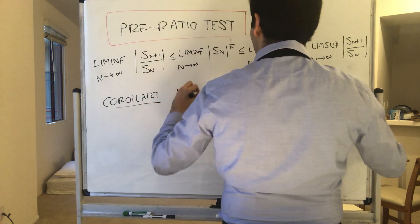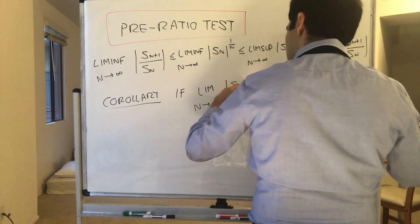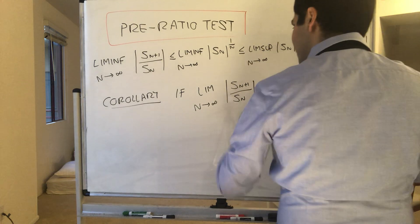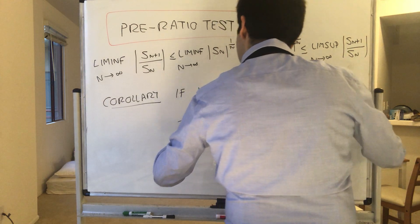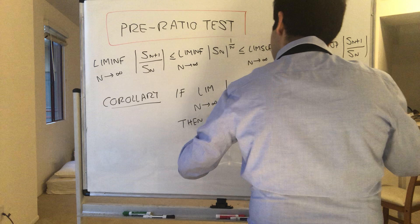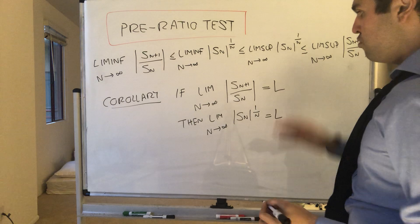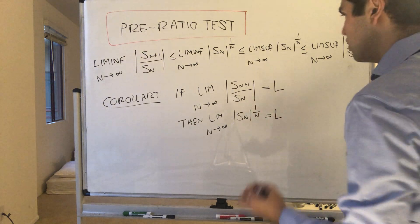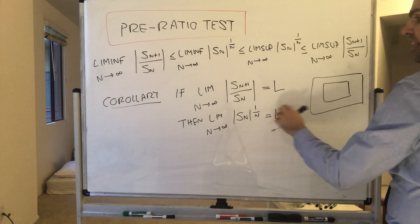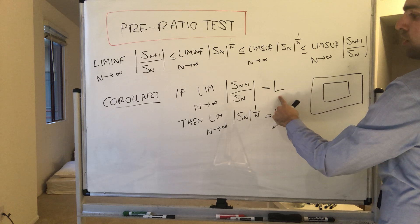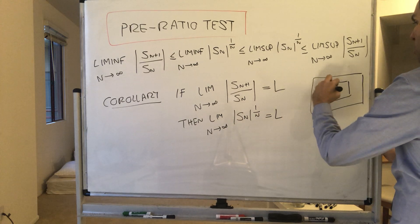If we know that the limit of the ratio test exists and equals L, then it follows that the limit of the root test is also equal to L. This is saying that if the ratio test is conclusive — so if this limit is bigger than one or less than one — then the root test is conclusive as well.